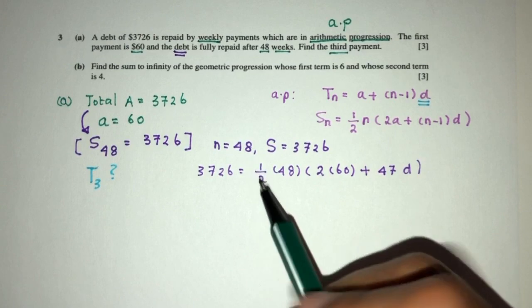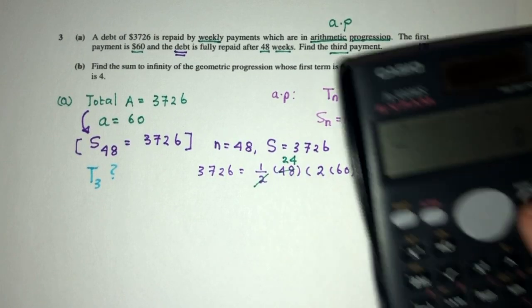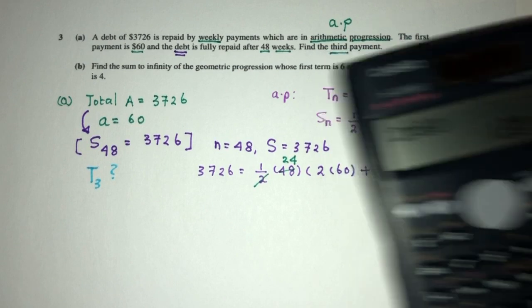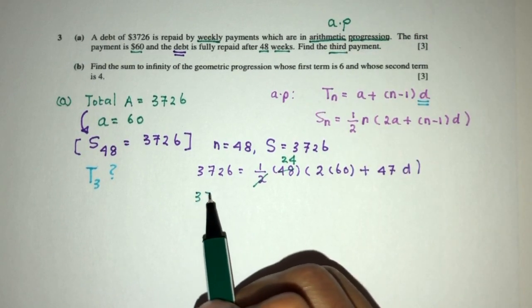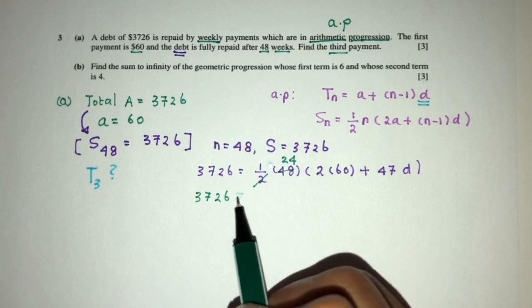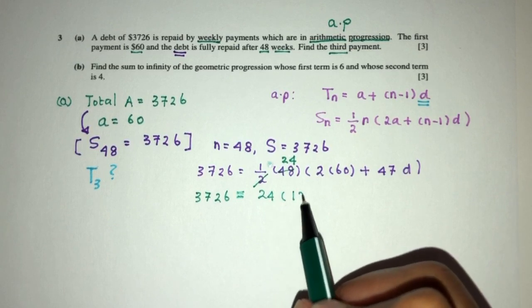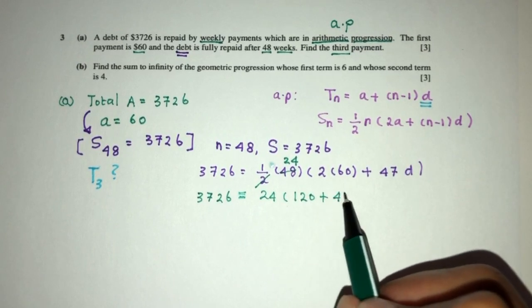So let's see how can we simplify this. So first thing, we can cancel out 2. There will be 24 here. And we have 2 times 60, that will be 120. So here we have 3,726, and we can, that equals to what? The value of 24, that will be 120 plus 47D.